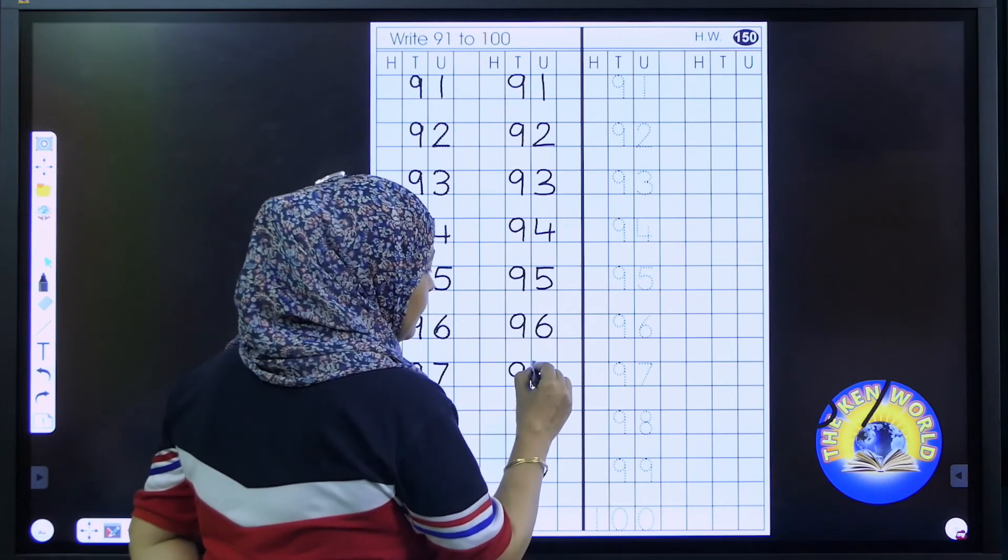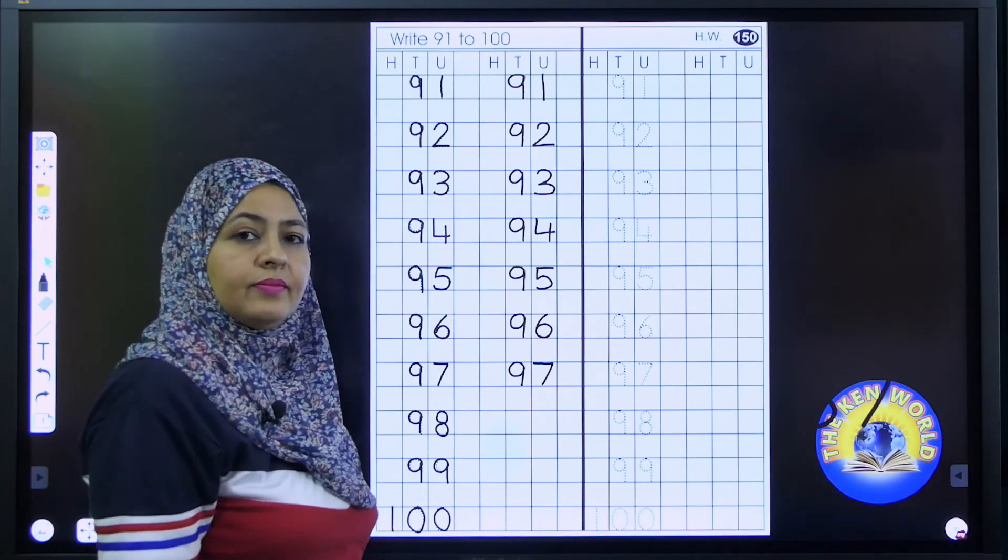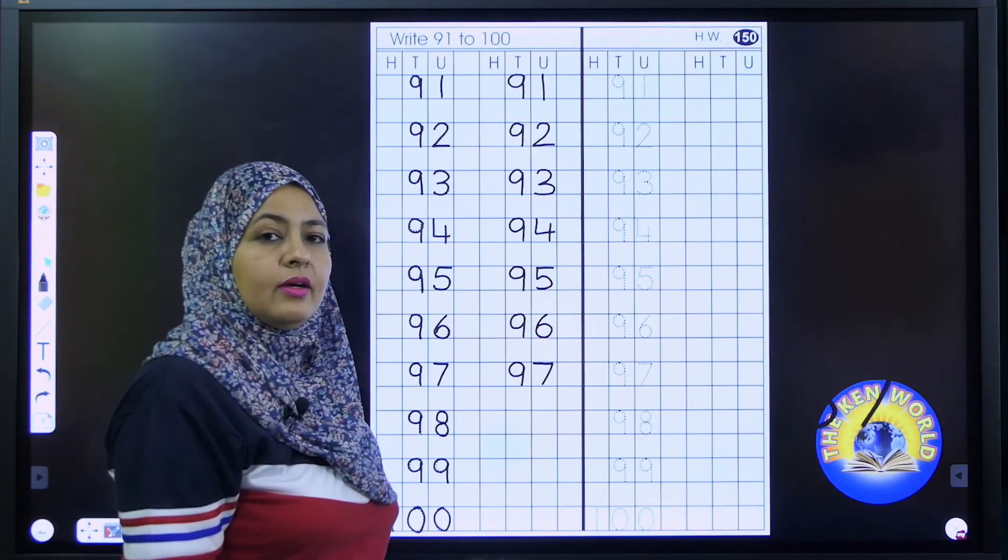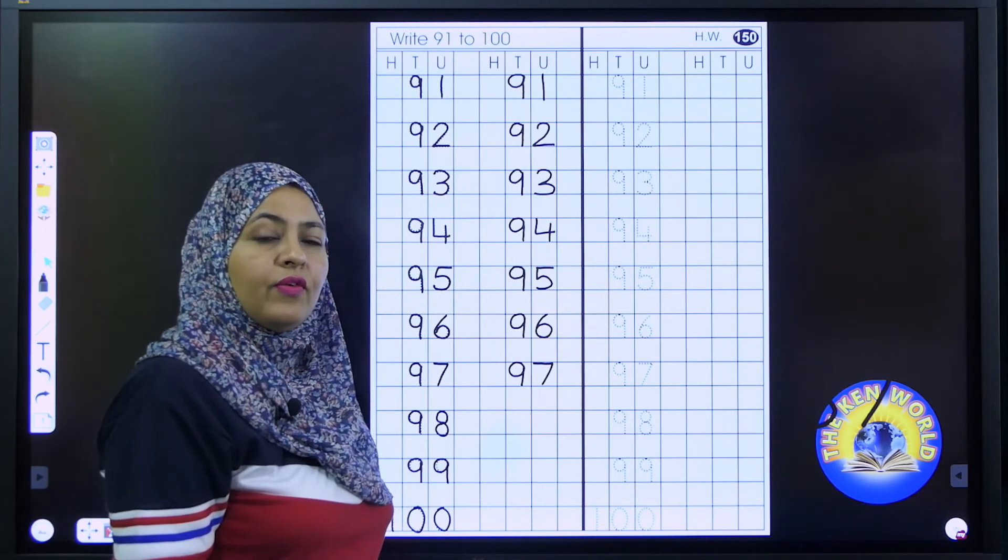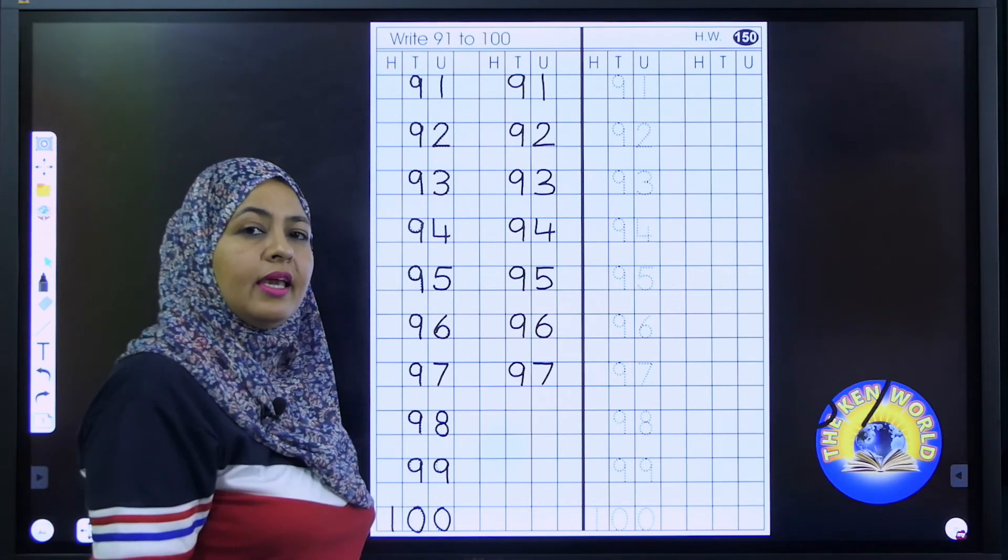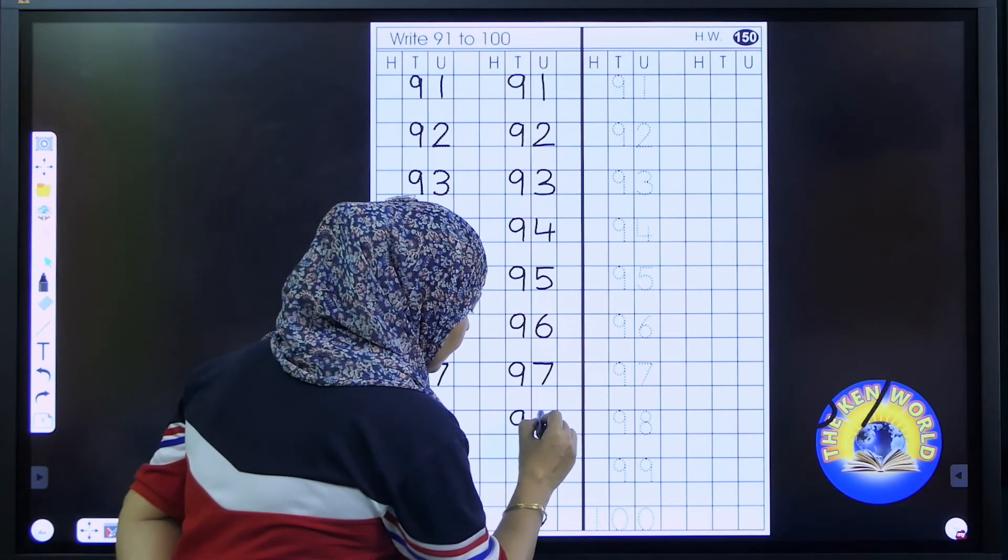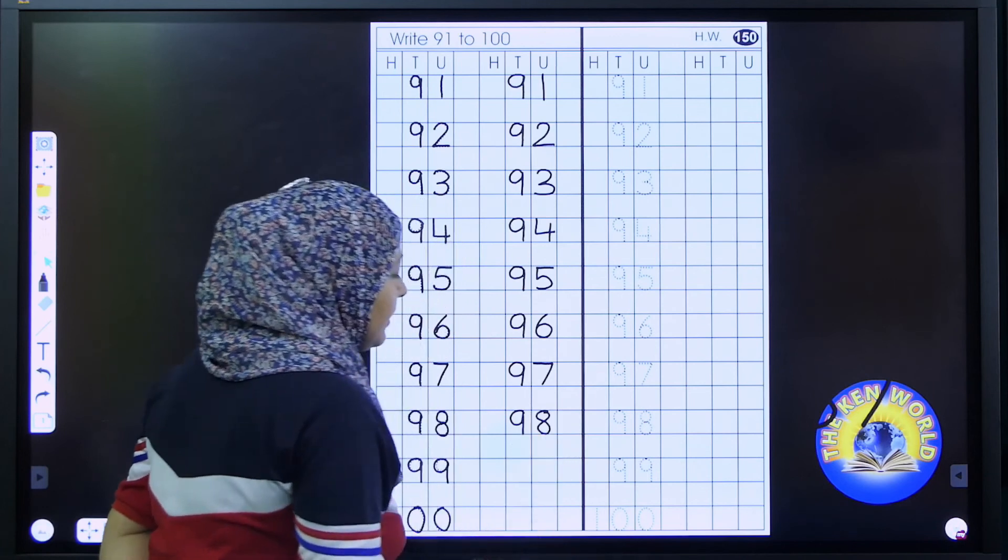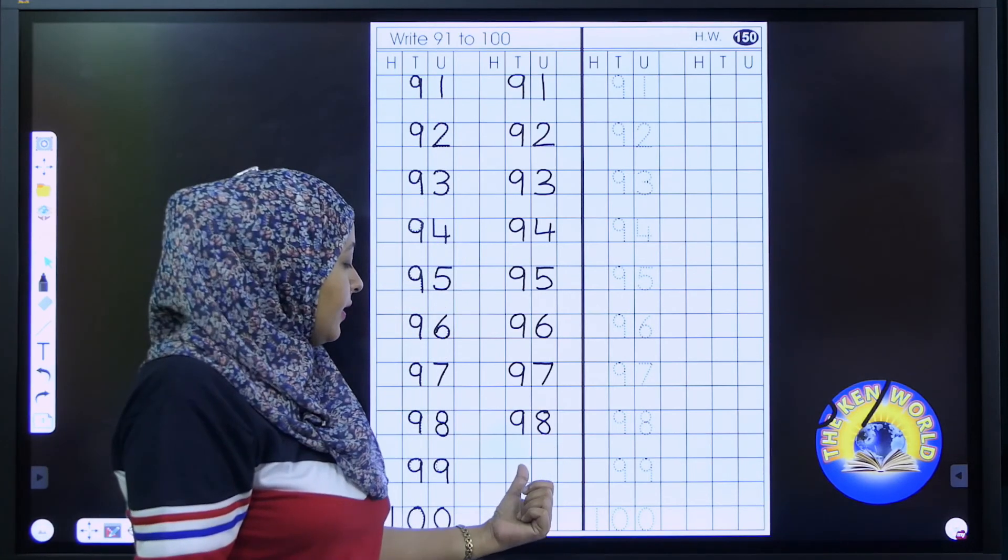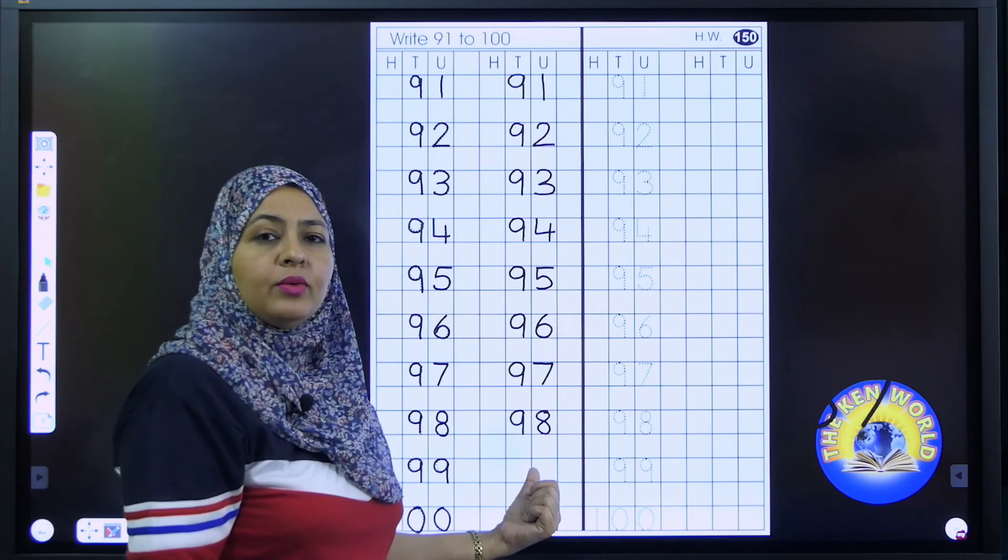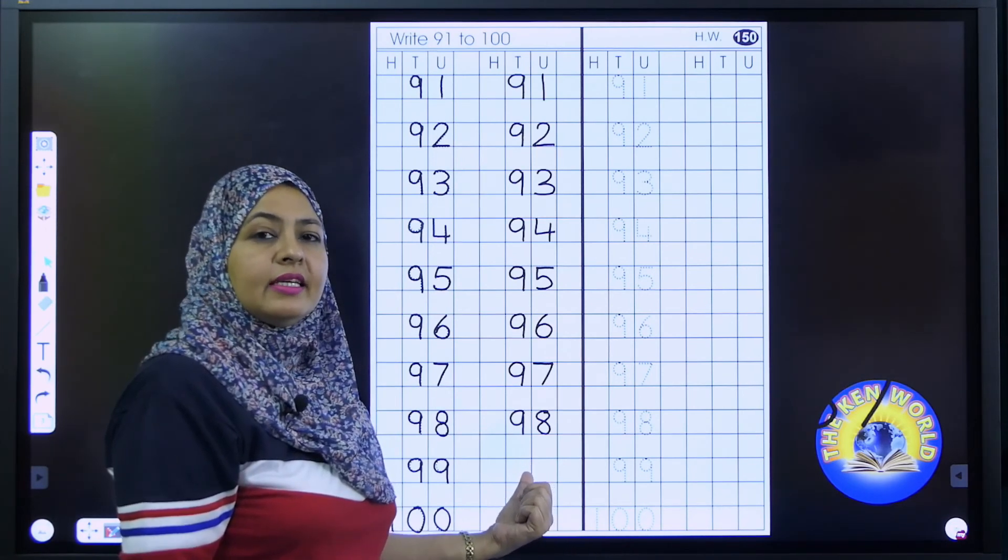97. 97. 97. 98. 98. 98. What should I write after 98? Speak loudly. Correct. 99.